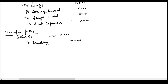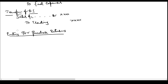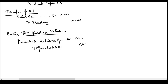Next we have to make some adjustments for purchase returns. The entry we pass for purchase returns: since purchases account has already been debited to the trading account, purchase returns has to be subtracted from purchases. So we pass an entry — purchase returns account debit to purchase account. Purchase returns account is debited because it shows a credit balance; to close the account we are debiting purchase returns and the amount is transferred to purchase account.